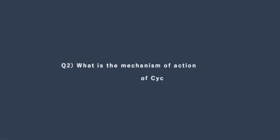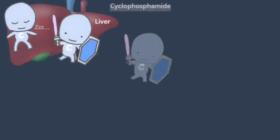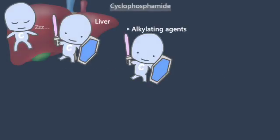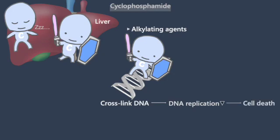What is the mechanism of action of cyclophosphamide? Cyclophosphamide is an alkylating agent. It prevents cell division primarily by cross-linking strands of DNA.